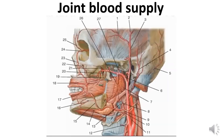Blood supply to the temporomandibular joint. Mostly, the temporomandibular joint is supplied with blood by the superficial temporal artery, ascending pharyngeal artery, and maxillary artery. The superficial temporal artery, arteria temporalis superficialis, is a thin terminal branch of the external carotid artery. It lies first in the parotid salivary gland in front of the auricle. Further, under the root of the zygomatic process, it goes under the skin and is located behind the auriculo-temporal nerve. Slightly higher than the auricle, it is divided into terminal branches, thereby participating in the blood supply to the temporomandibular joint.